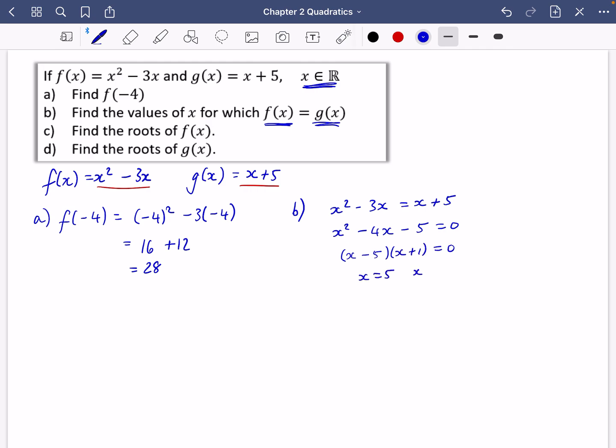That looks like it's going to factorize to x minus 5 and x plus 1. So the values of x are 5 or minus 1. Those are our two values for part B.